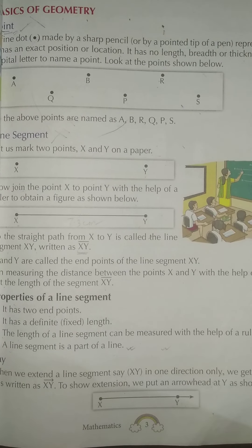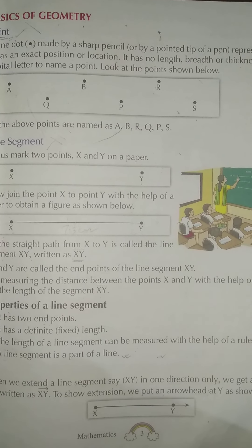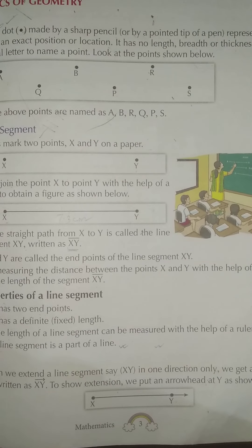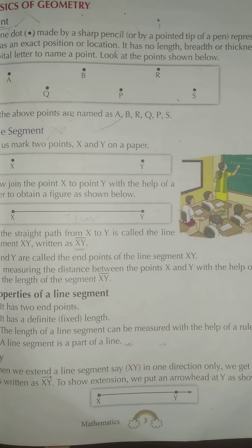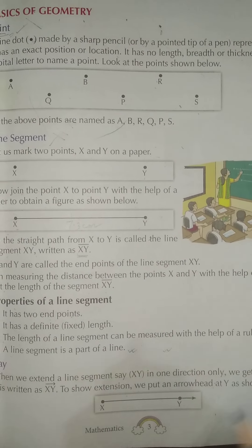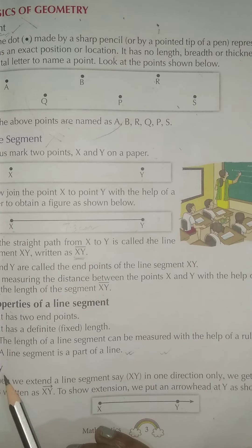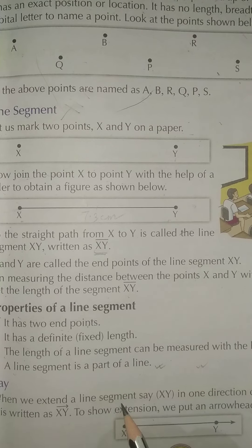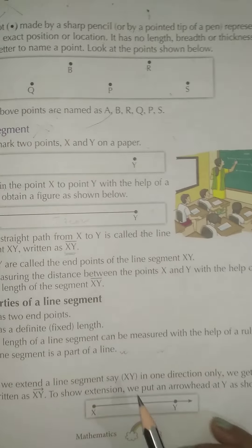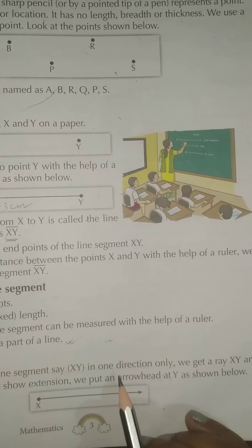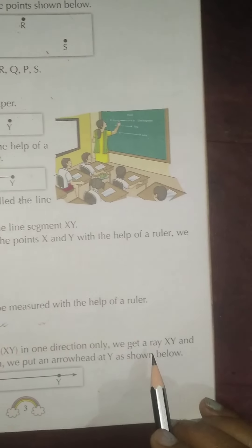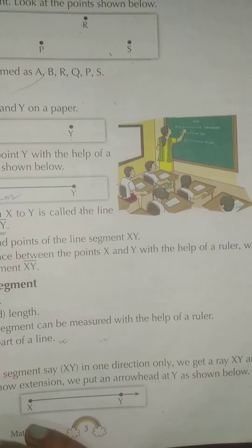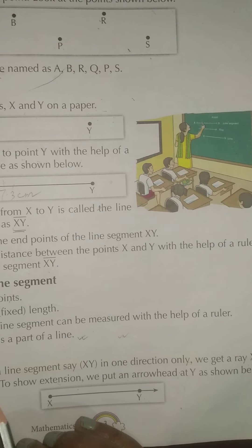What is Ray? So before we start, all of you take out your book number 8, page number 3. So what is Ray? When we extend a line segment, say XY, in one direction only, we get a Ray XY. And it is written as XY.